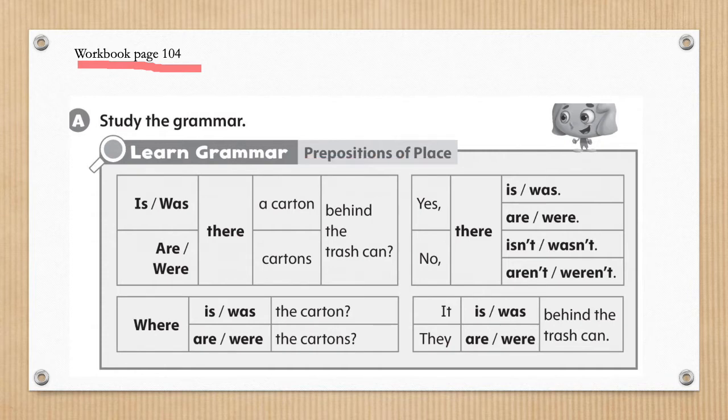Okay students, today's grammar with prepositions of place will focus on asking questions. You can see we have IS for present or WAS for past. This is for singular. Students, remember singular is just one thing. So, is there a carton, one, behind the trash can? Or, the past, was there a carton behind the trash?